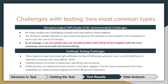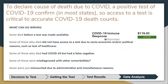To declare a cause of death due to COVID, most states require a positive test to confirm it. However, there's now a shift toward using probable COVID-19 deaths, but some states aren't on board with that, creating significant discrepancy in the data.